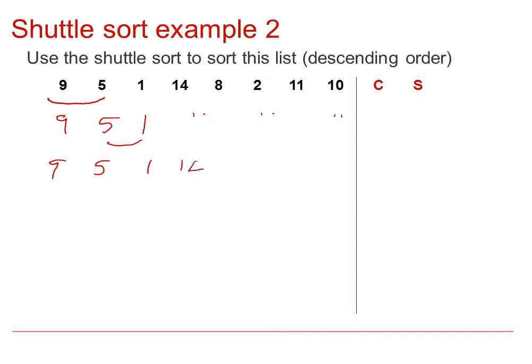In the next pass, we compare the 14 with the 1, and that would change, and then the 14 with the 5, and then the 14 with the 9. Therefore, we would now have an order of 14, 9, 5, 1, and then the other numbers following on.